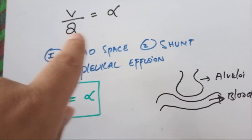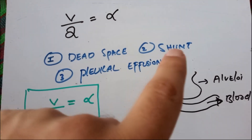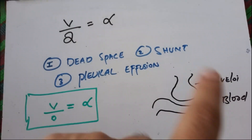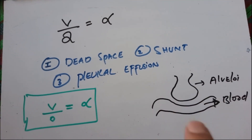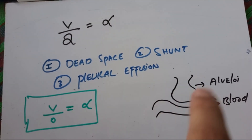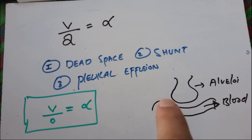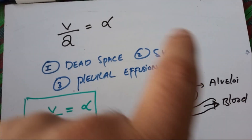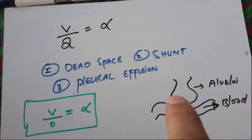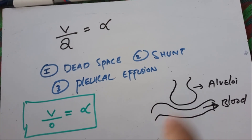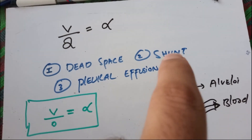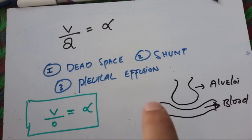Another MCQ: V/Q is infinity — what is this: dead space, shunt, or pure fusion? To understand this, consider the alveoli and the blood capillary. Anything causing a problem in the alveoli or within the lungs will cause a shunt. Shunt means blood passes without oxygenation, without gaseous exchange.